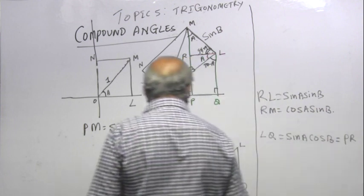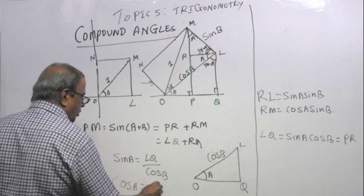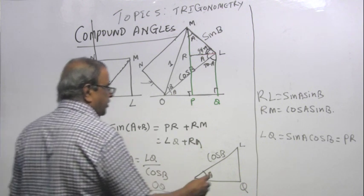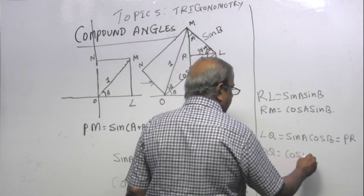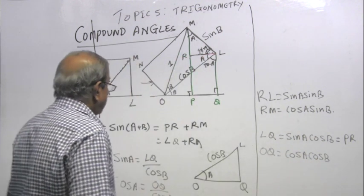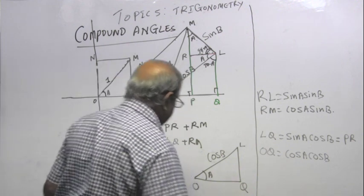What is sin A? Sin A equals LQ over cos B. So can you say LQ equals sin A cos B, which is the same as PR. What is cos A? Cos A equals OQ over cos B. So can I say OQ equals cos A cos B.